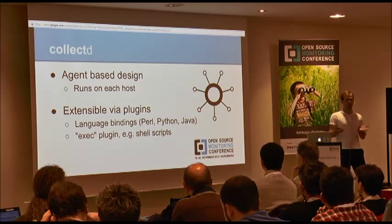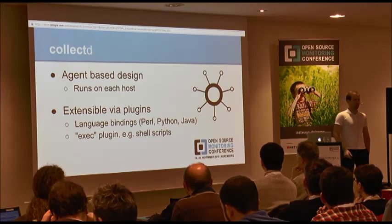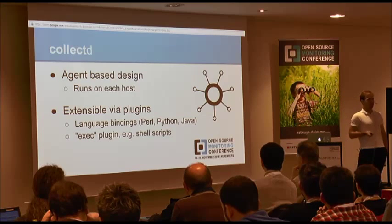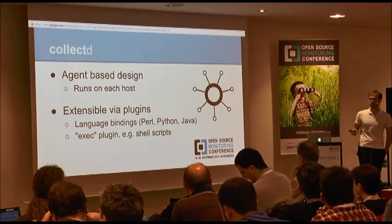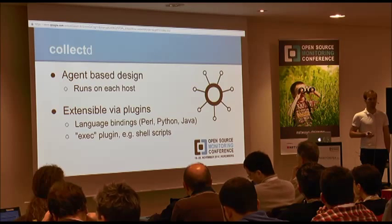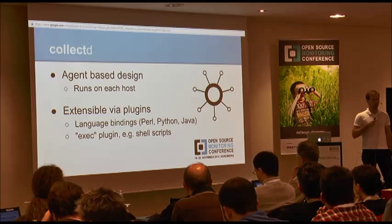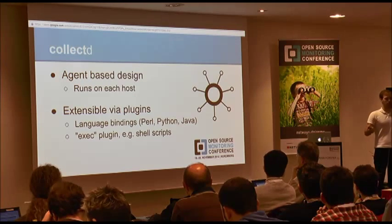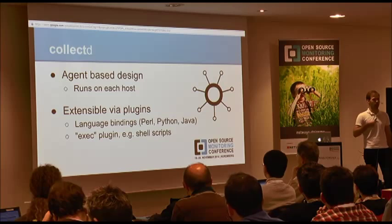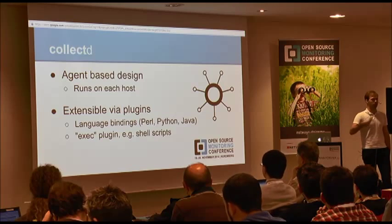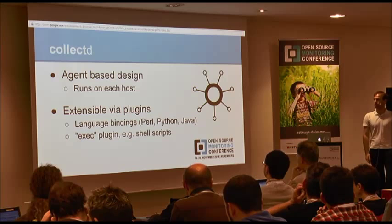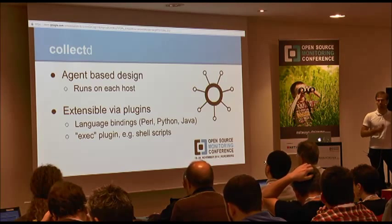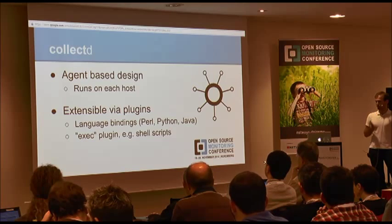There is a difference because we usually have very high frequency for these metrics. We don't necessarily fork for every single data collection, but you can have the script running and basically do its own sleep and collection cycle, outputting multiple metrics one after the other.